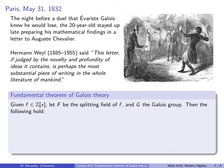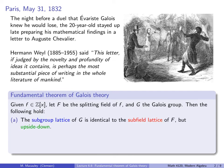The crowning achievement of Galois's work is now known as the Fundamental Theorem of Galois Theory. This is about polynomials with integer coefficients, and it compares the structure of the splitting field of that polynomial — call it big F — and the Galois group of that polynomial — call it big G. In particular, it says the following things hold. First, the subgroup lattice of G is identical to the subfield lattice of F, but upside down.